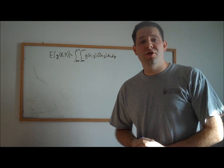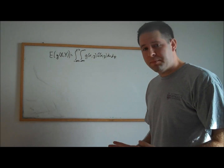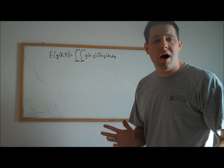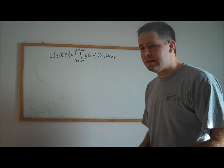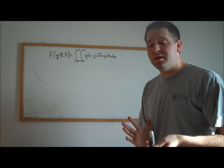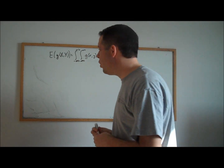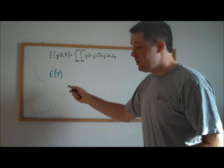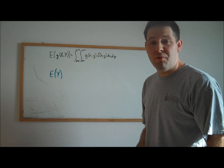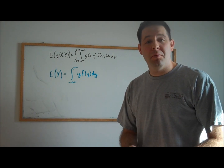The final thing I'd like to show in this video is something called the law of iterated expectations. Suppose that you want to know the expectation of y. We have a formula for the expectation of y, but the trouble is you don't know the marginal probability of y.